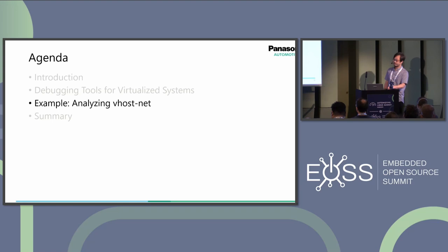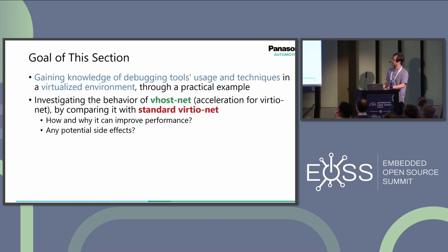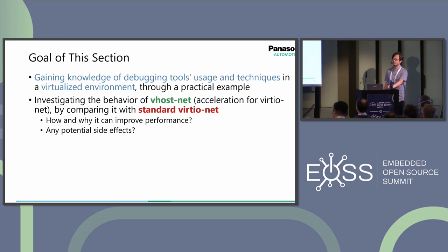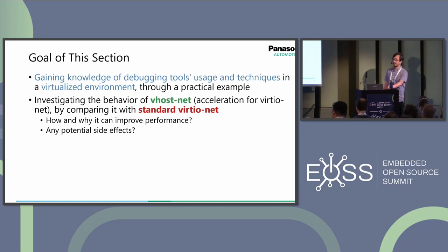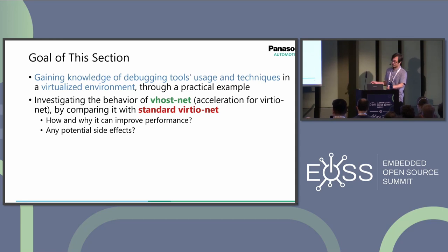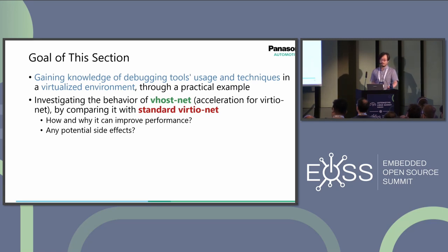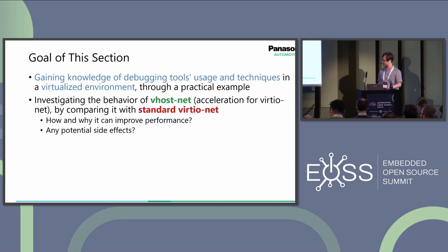Let's deep dive into practical examples using these tools. The goal of this section is to gain knowledge of debugging tools, usage, and techniques in a virtualized environment through practical examples. As an example, we'll investigate the behavior of VHOST-net, which is an acceleration for standard virtio-net by comparison with the standard one. Then we'll explore how and why it can improve performance, as well as any potential side effects that could exist.